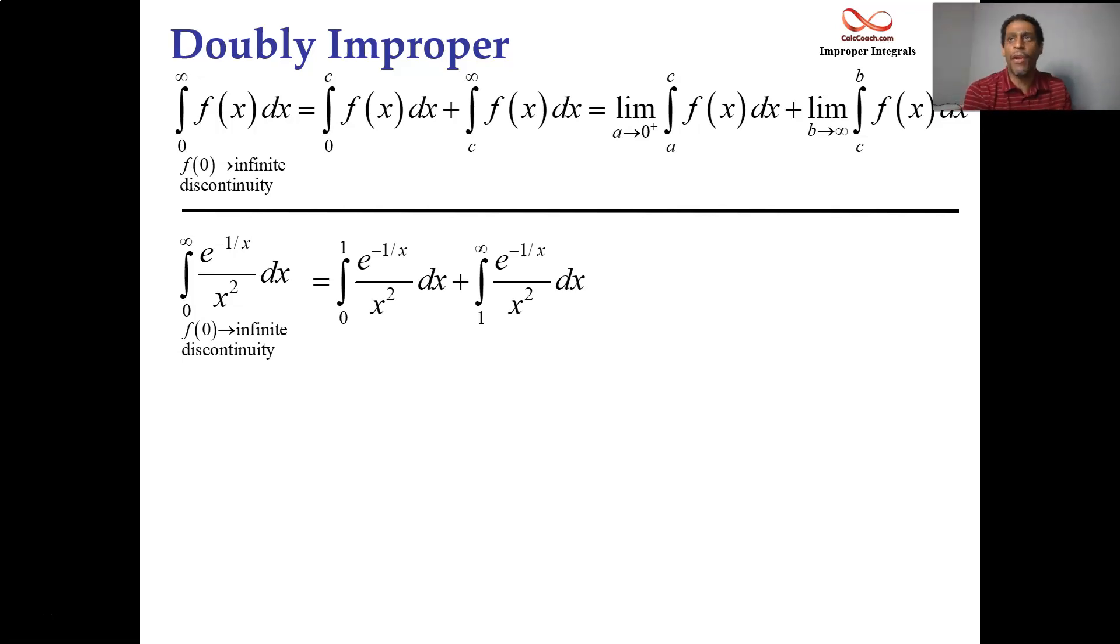And we replace the zero and we replace the infinity with variables. And we let those variables approach the zero from the right-hand side. And then the other one's going to approach infinity.